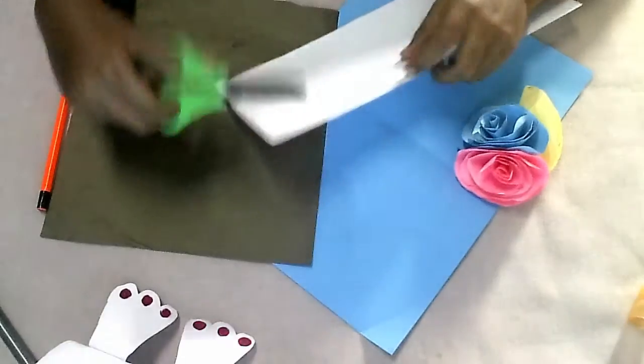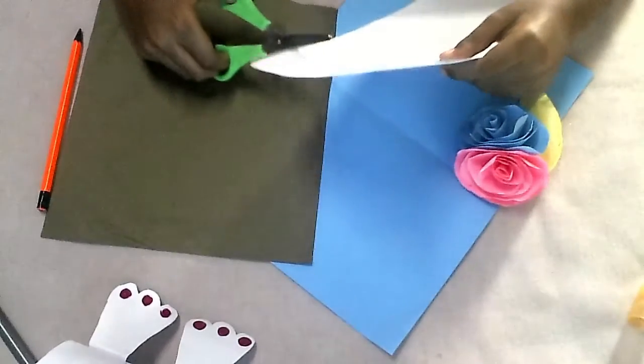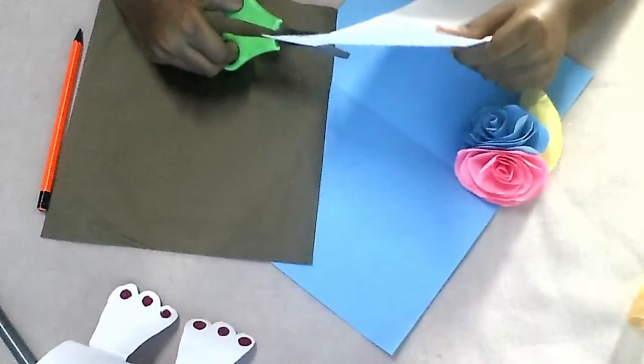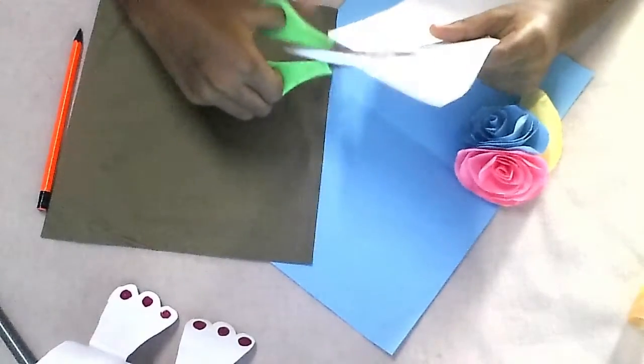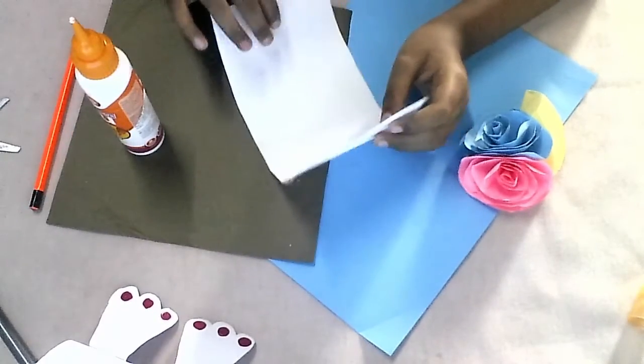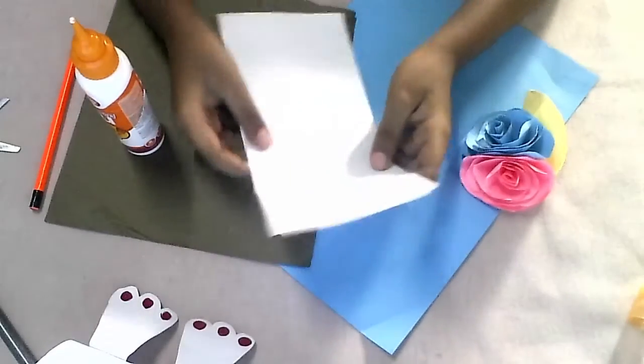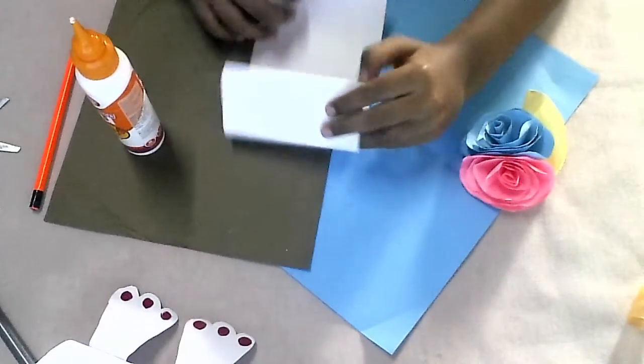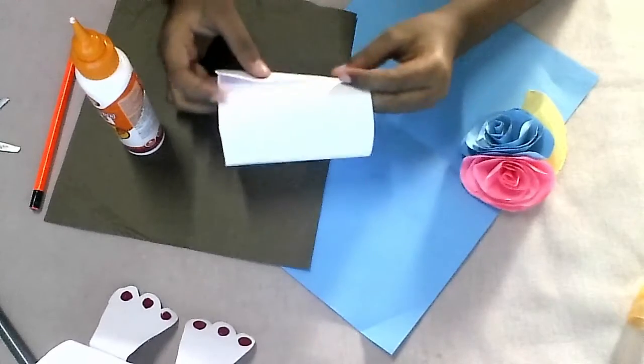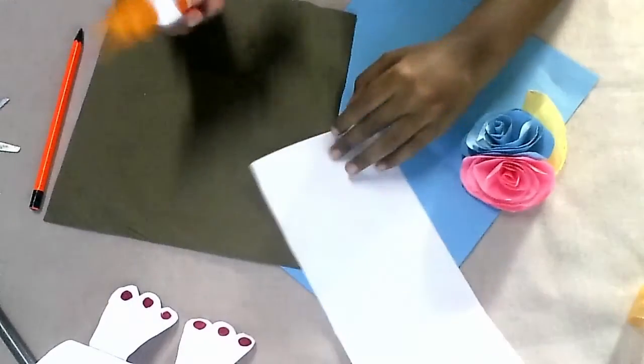Now I take the other piece. Now I am going to cut a little piece. Now I am cutting and I got this and we are going to make a circle like this and take the glue.